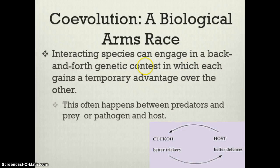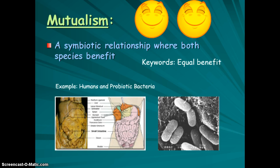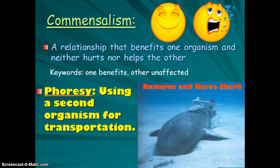There are several different types of relationships you need to know. Mutualism is where both species get something good out of the relationship. For example, we have probiotic bacteria in our gut — we couldn't digest all of our food without them, and it's good for both of us.